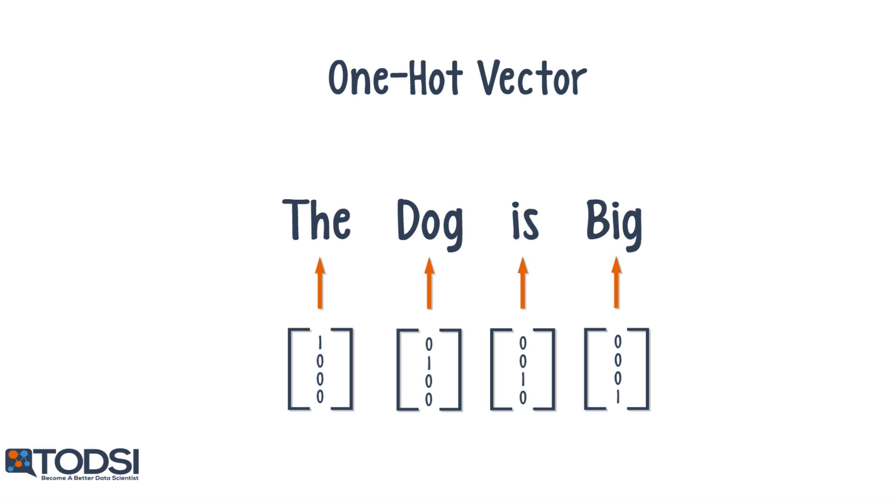Not surprisingly, this can get out of hand if the vocabulary size is large. Large vectors can really slow down the processing time, as we've seen before.